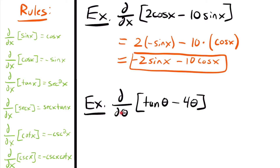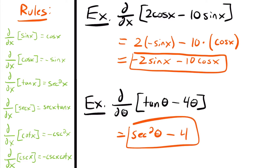Next up, we have the derivative with respect to theta: d/dθ of tan(θ) minus 4θ. This is going to be equal to the derivative of tan(θ). From our rules, the derivative of tan(x) is sec²(x), so we have sec²(θ), and then minus the derivative of 4θ, which is just 4. Remember, if we have a variable to the degree of 1, the derivative is just the coefficient. So the answer is sec²(θ) minus 4.